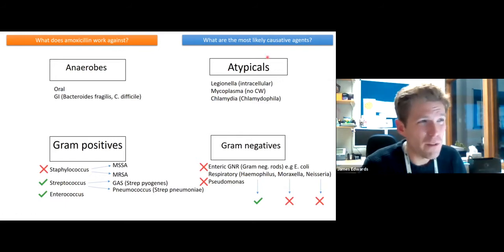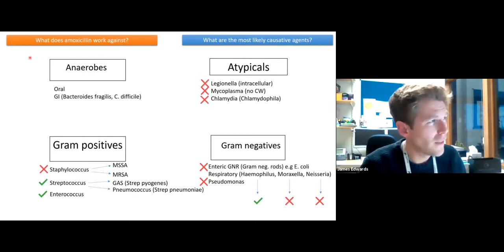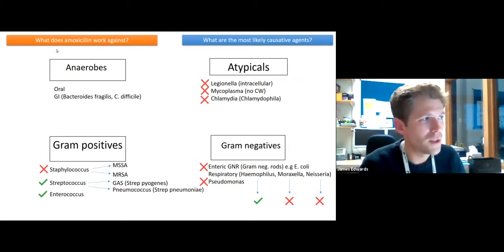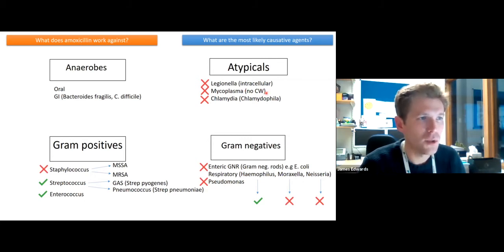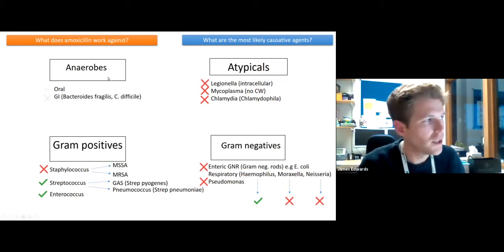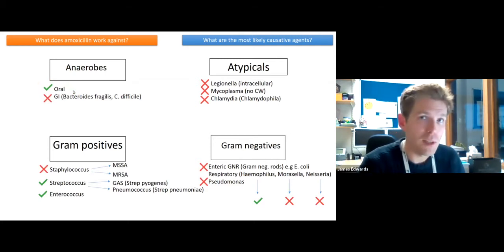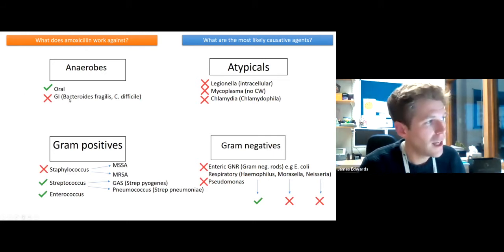The same is true for atypical organisms — the child doesn't appear to have symptoms of Legionella or similar organisms. And that's fine, because amoxicillin doesn't work against these things anyway. It's sometimes referred to as a cell-wall-active antibiotic: if the bacterium has no cell wall, the drug simply won't work. As for anaerobes, amoxicillin works against some oral anaerobes — which is why dentists sometimes prescribe it for dental abscesses — but it doesn't work against some of the GI anaerobes.